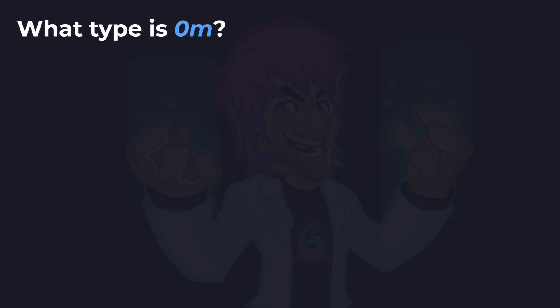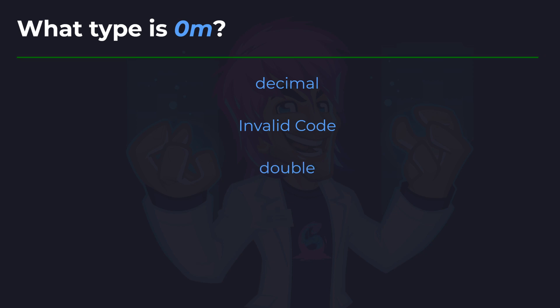Next up, what type is `0M`? Is it a decimal, is this invalid code, or is it a double? And the answer is a decimal. Any value — numeric, whole or floating point — followed by an M, upper or lower case, is a decimal. The lower case and upper case M is how we define a literal decimal.